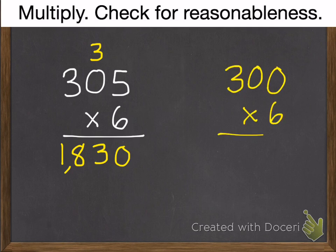If we check it, we'll get 300 times 6, which is 1,800.